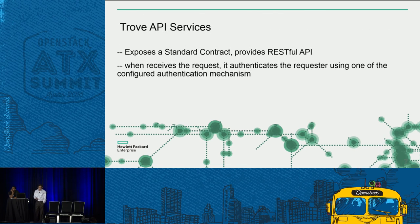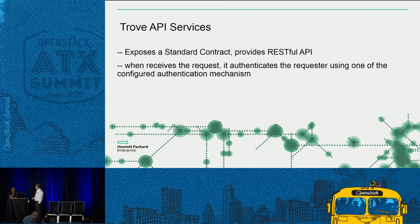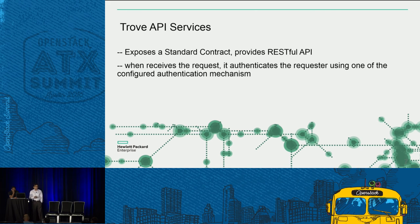One component is the Trove API service, which provides the RESTful API and implements WSGI. When a request comes from the user, it receives the request and sends it for authentication to the authentication server responsible for authenticating the user — typically Keystone.